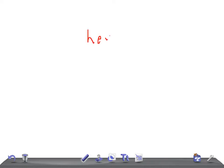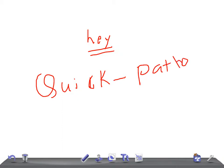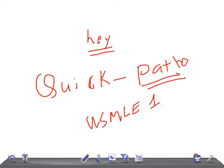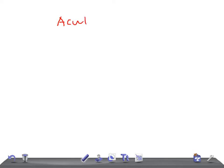Welcome back to All About Law. This is Quick Pathology for USMLE. In these videos we're going to discuss the macroscopic appearance and the microscopic appearance, because this is really very important for your USMLE Step 1. Today's topic of discussion is acute viral hepatitis.